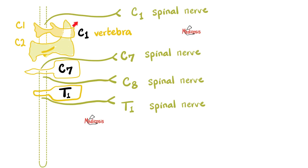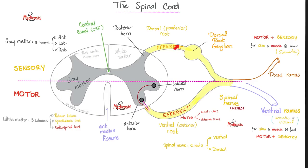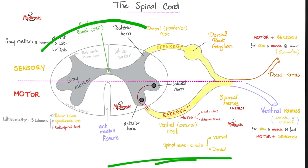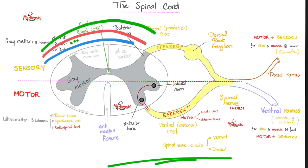Here is a cross-section of the spinal cord. The dorsal root and ventral root unite to form the spinal nerve. Each spinal segment gives a spinal nerve on the left and on the right. Around the spinal cord are the meninges: dura mater, arachnoid mater, and pia mater. Above the dura mater is the epidural space; below it is the subdural space; below the arachnoid is the subarachnoid space, where we find cerebrospinal fluid.